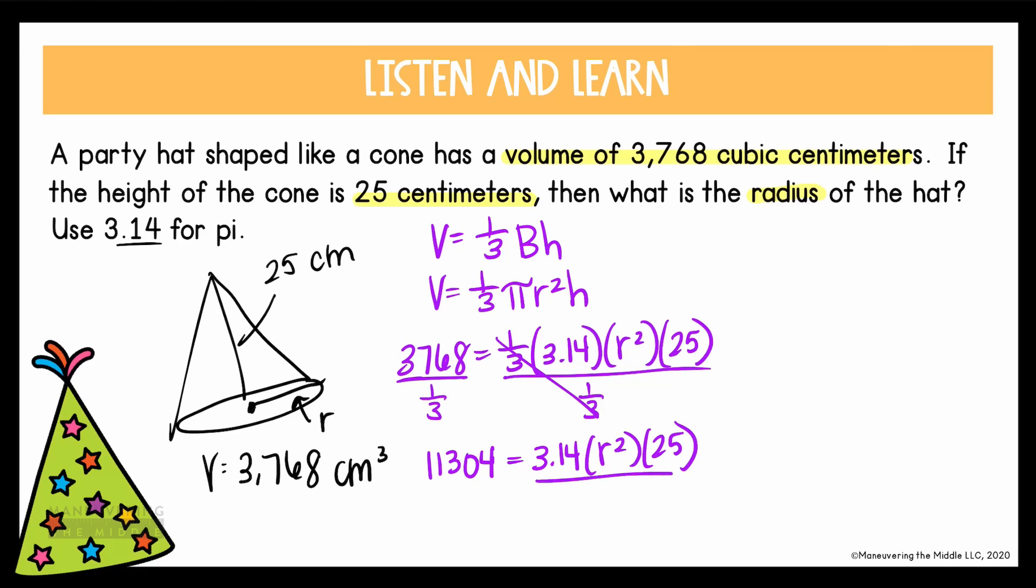So I'll keep going, 3.14 is being multiplied, so let's do the inverse to remove it and divide. I'm going to run out of room here, so let's write it up here. On the left, when I divide that out, I get 3,600. And then I still have r² times 25. One more division, so let's divide both sides by 25 to cancel it from the right. Over here that gives me 144 equals r².